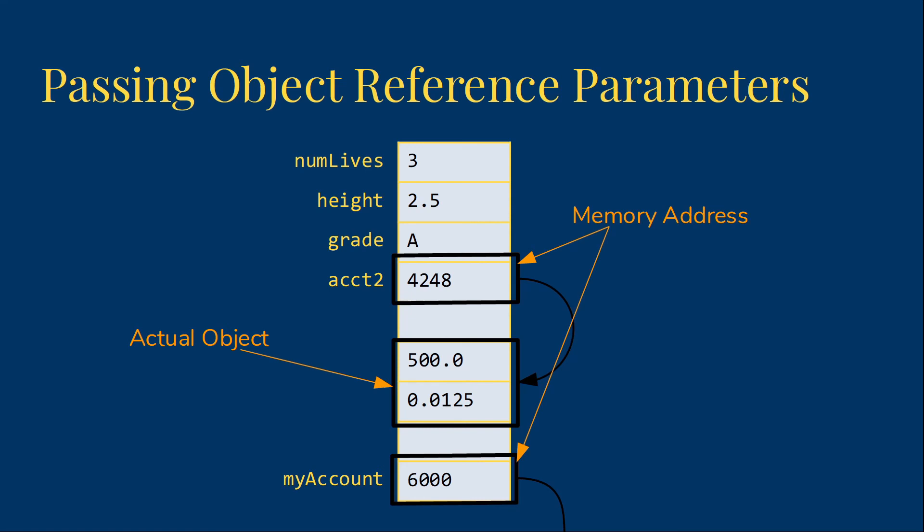So now my account is pointing at some other object in a different part of memory. And anything we do with my account in that variable will have no impact on the original account2.